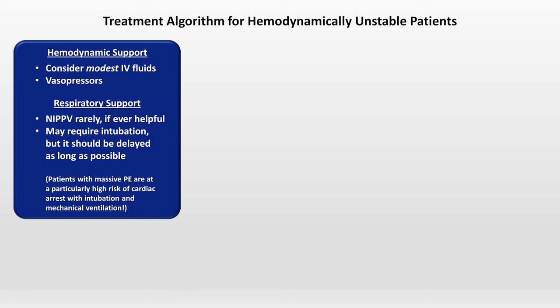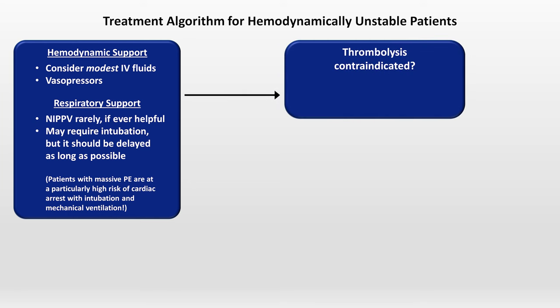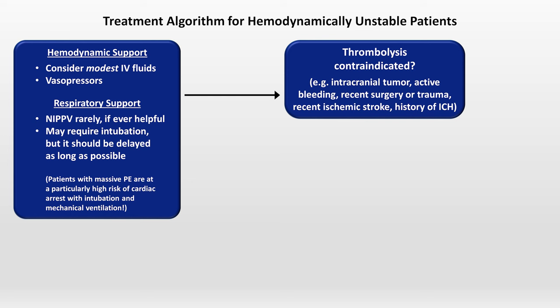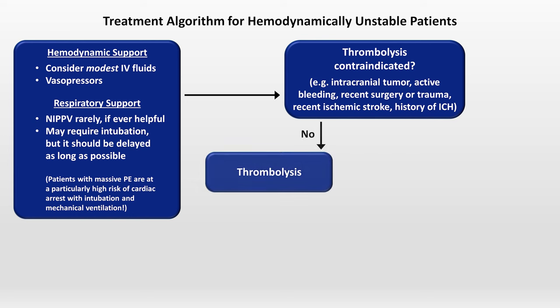Patients with massive PE are more likely to die from cardiovascular collapse than from respiratory failure. Therefore, the most important goal is to restore pulmonary blood flow — so ask if thrombolysis is contraindicated. Thrombolysis carries greater risk of harm, so the contraindications are greater in number and broader than those for anticoagulation, including any intracranial tumor, recent ischemic stroke, and prior intracranial hemorrhage. If not contraindicated, give it. If the patient is truly crashing and arrest seems imminent, to some extent all contraindications become relative. Half-dose thrombolysis is an option to consider in such cases as well.